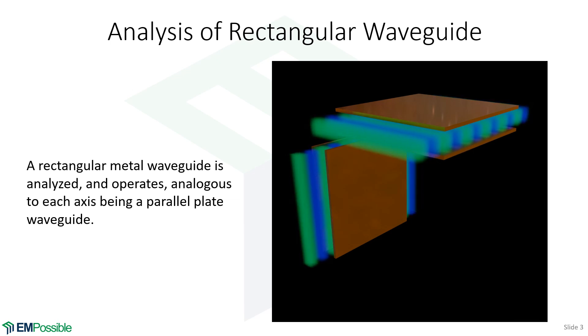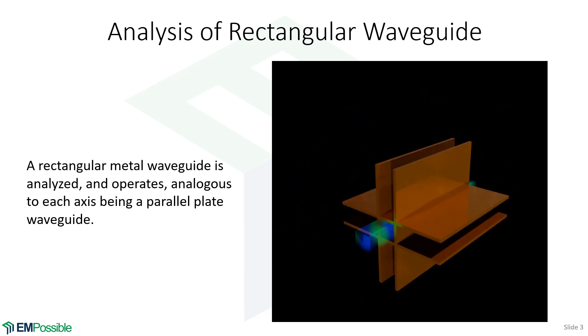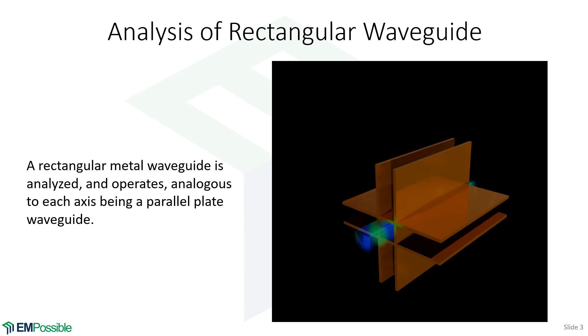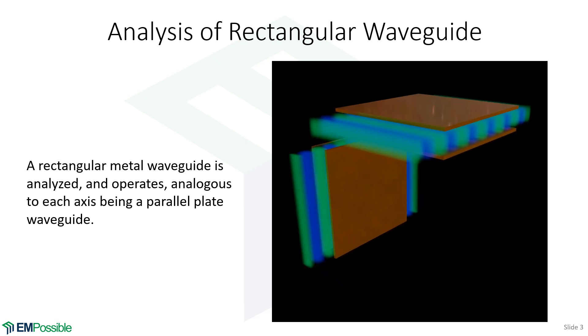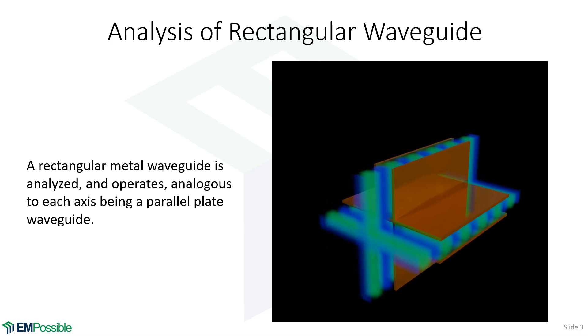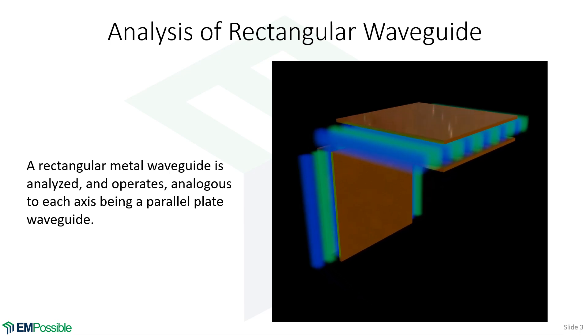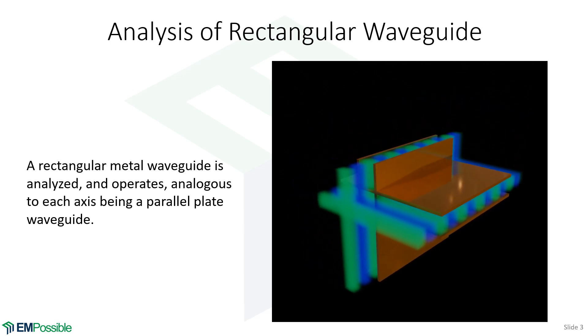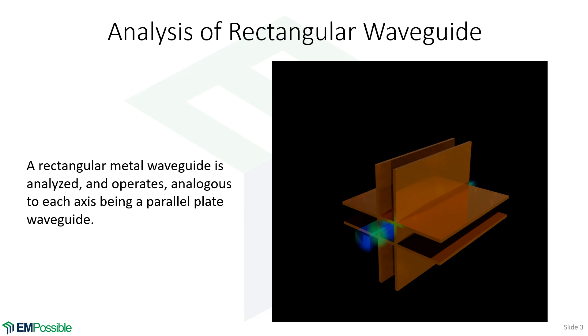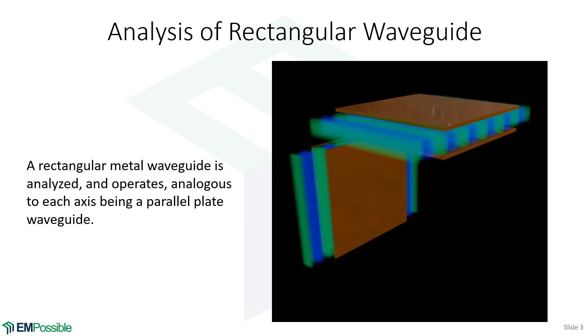When we analyze this, it's a great waveguide to analyze after parallel plates because the rectangular waveguide is very much like two parallel plate capacitors. I'm trying to visualize this on the right. We have two parallel plates—one would confine vertically, the other would confine horizontally. If we overlap them, we get a little channel down the middle, and that is very much like our rectangular waveguide.